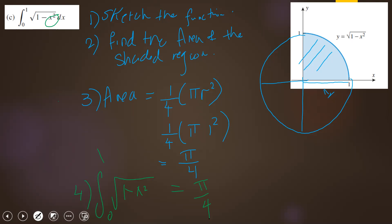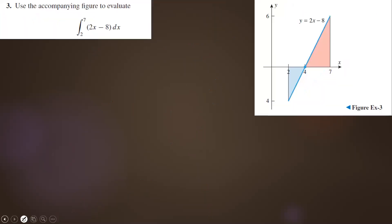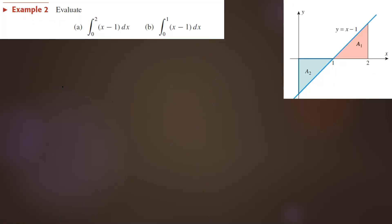Is it clear? Yes. Now let's evaluate another example. Here we have the function x − 1, which is already sketched. I want to find the shaded region from 0 to 2 and from 0 to 1.